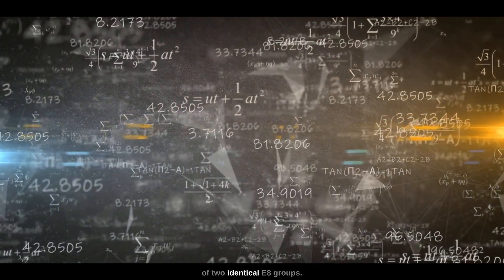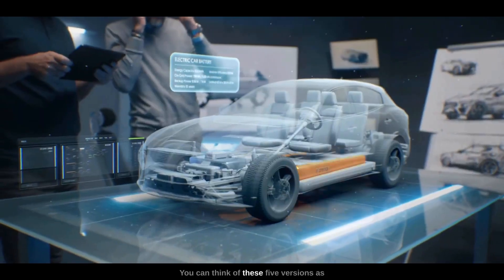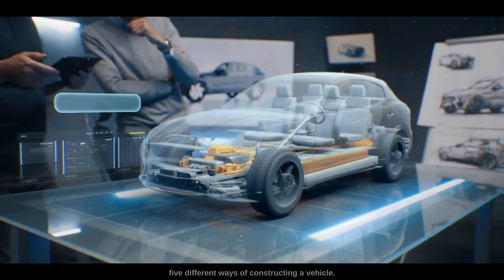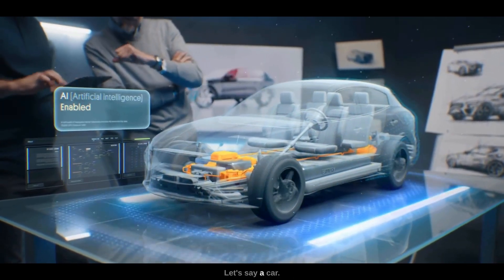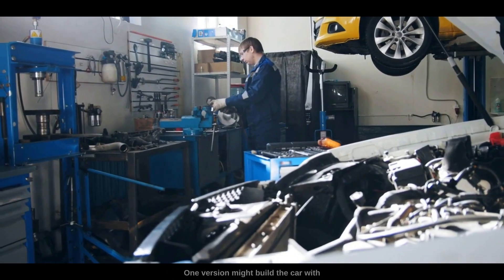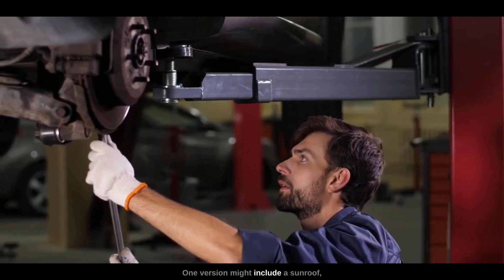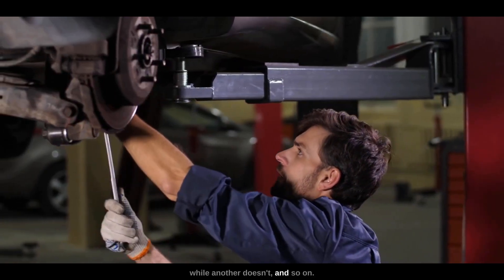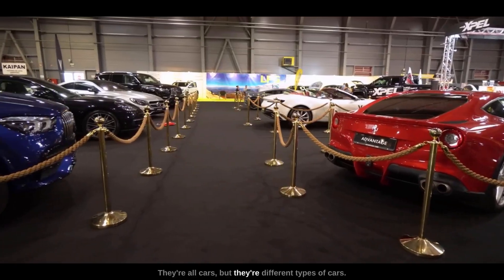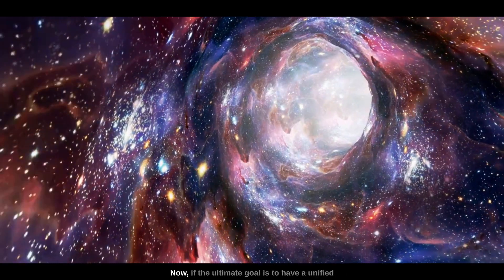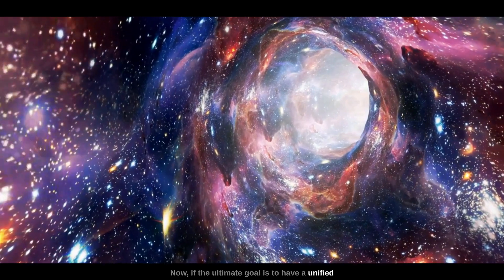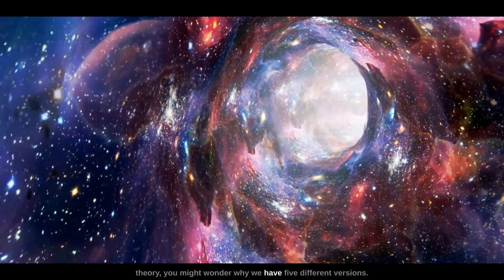You can think of these five versions as five different ways of constructing a vehicle, let's say a car. One version might build the car with four doors, another with two doors. One version might include a sunroof while another doesn't, and so on. They're all cars, but they're different types of cars. Now if the ultimate goal is to have a unified theory, you might wonder why we have five different versions.